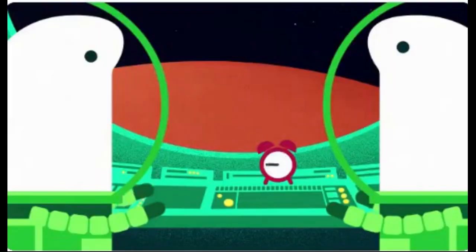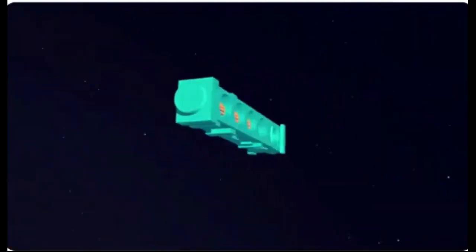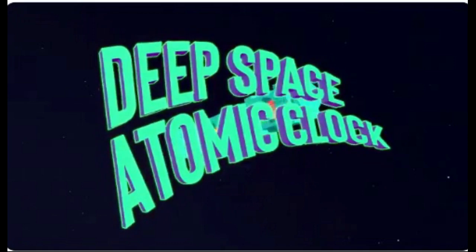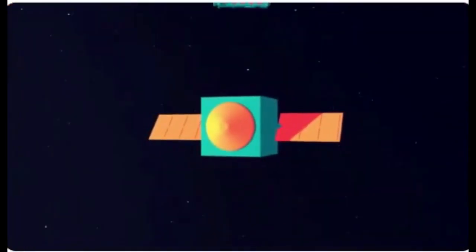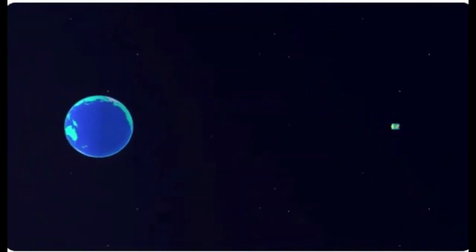Up to 50 times more stable than the atomic clocks on GPS satellites, NASA's Deep Space Atomic Clock is intended to be the most stable atomic clock ever flown in space. It achieves this stability by using mercury ions.